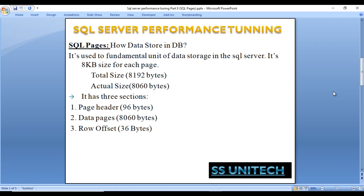A SQL page has three sections: first is the page header, then the data area, and then the row offset array. The data area takes around 8060 bytes, the page header takes around 96 bytes, and the row offset takes around 36 bytes.